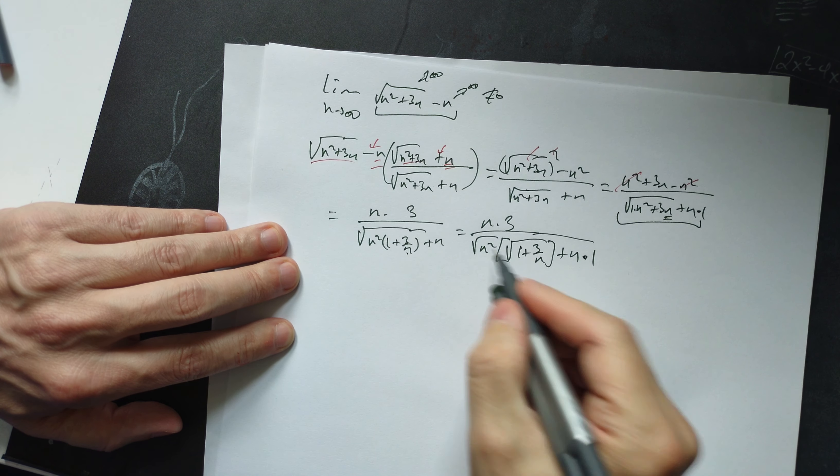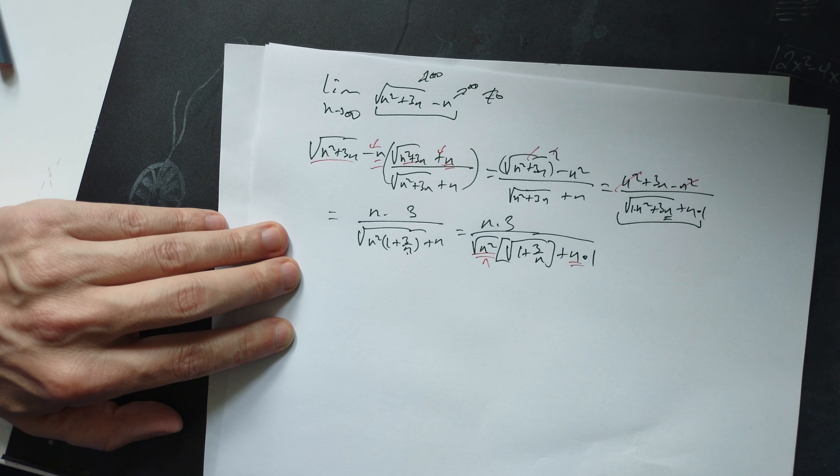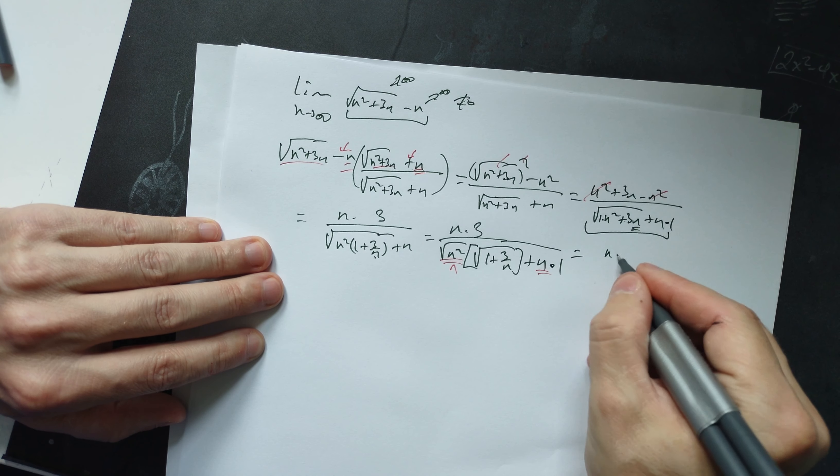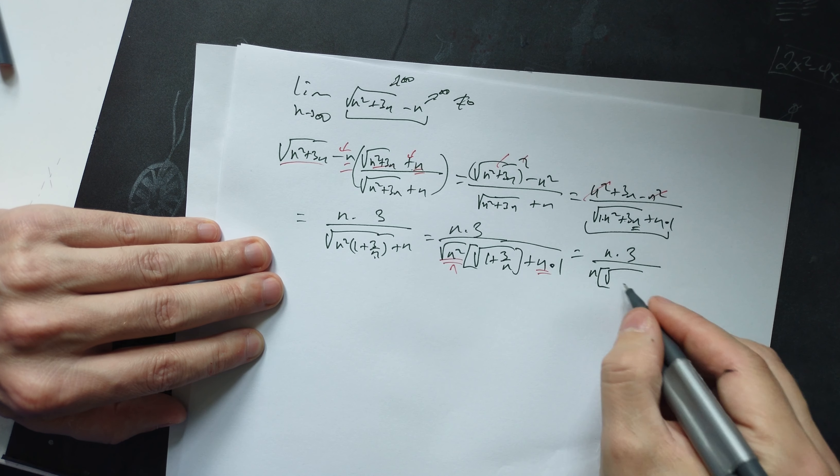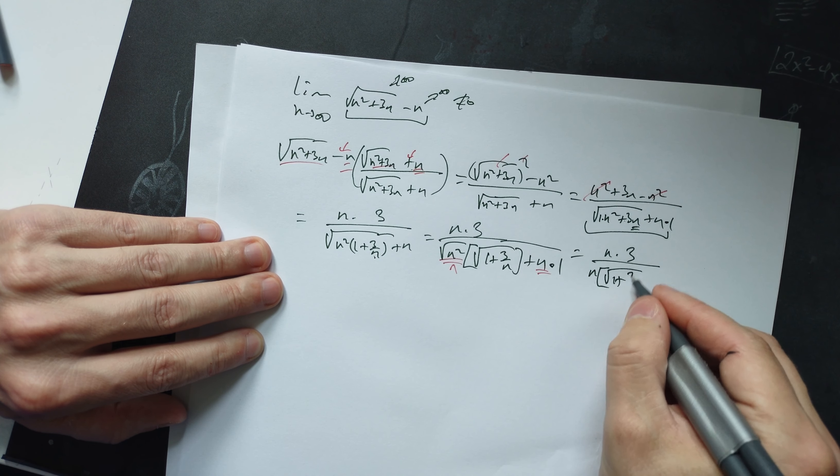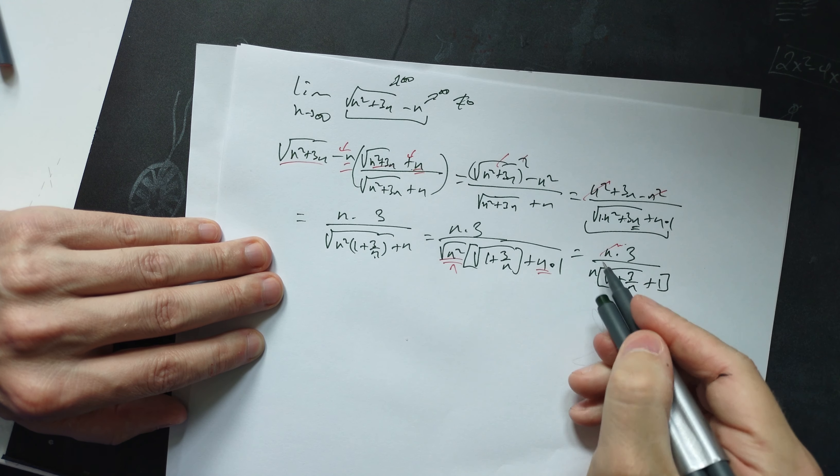Now make an observation: √n² is really n, and this is also n, so you can factor. This gives n·(3/(√(1 + 3/n) + 1)). The n cancels.